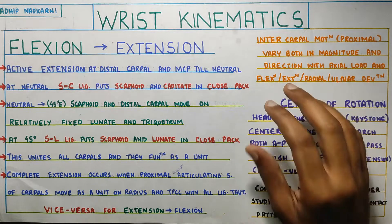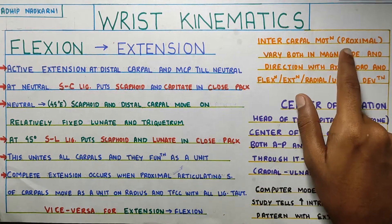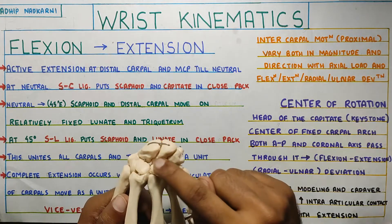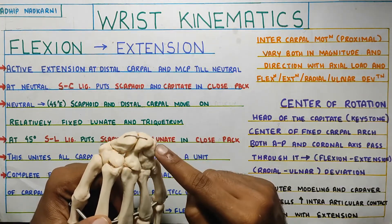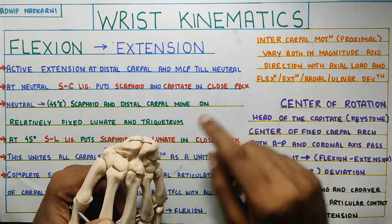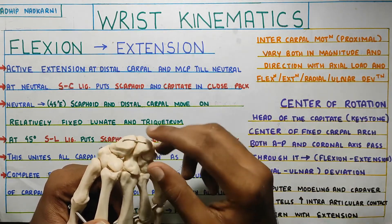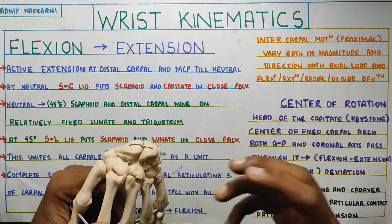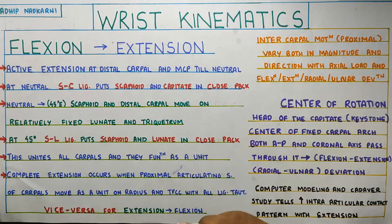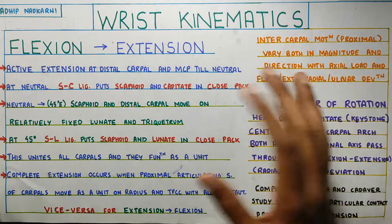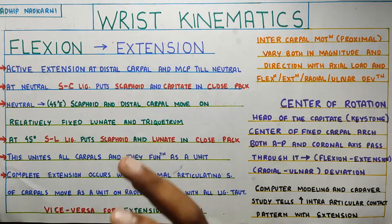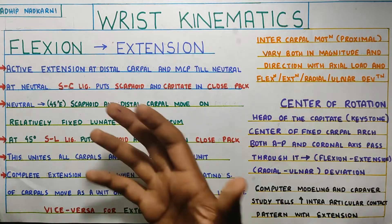This is a very oversimplified model. The reason is that intercarpal motion - the motion between the carpal bones, especially the proximal ones - varies a lot in both magnitude and direction with your axial compression, flexion, or extension. That's why this model is not a perfect or true model, but it's the best we have.